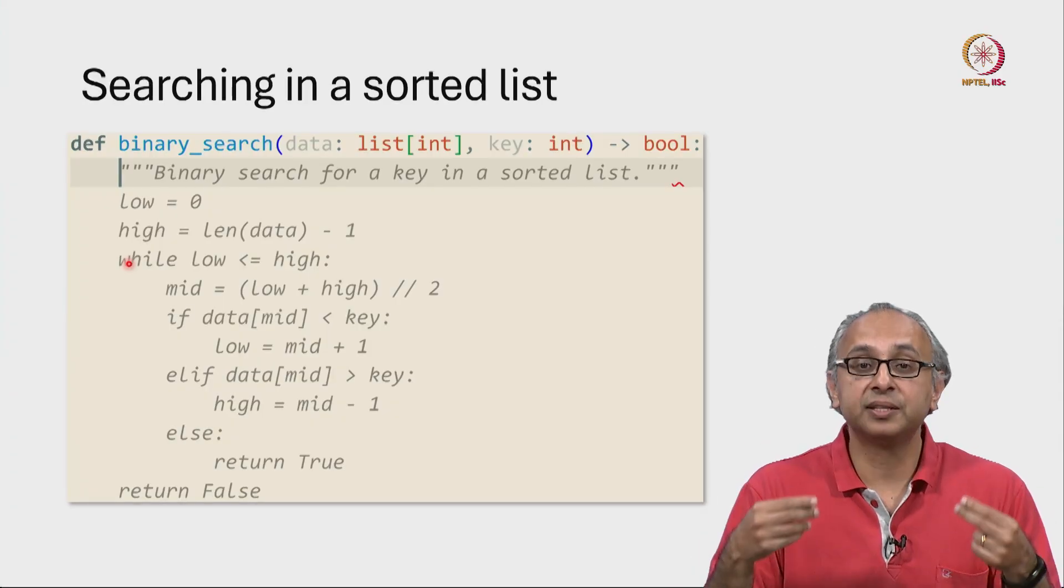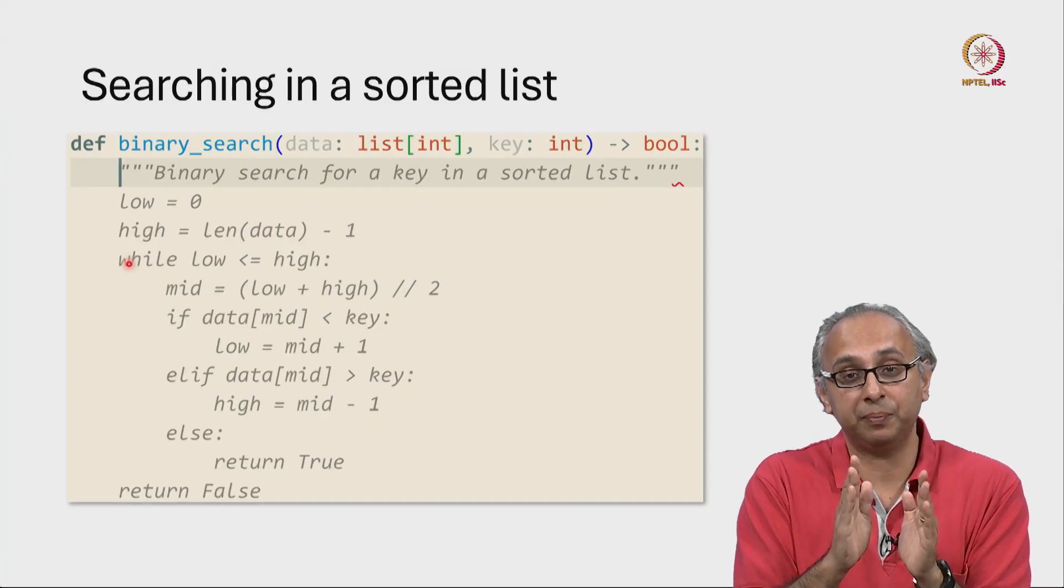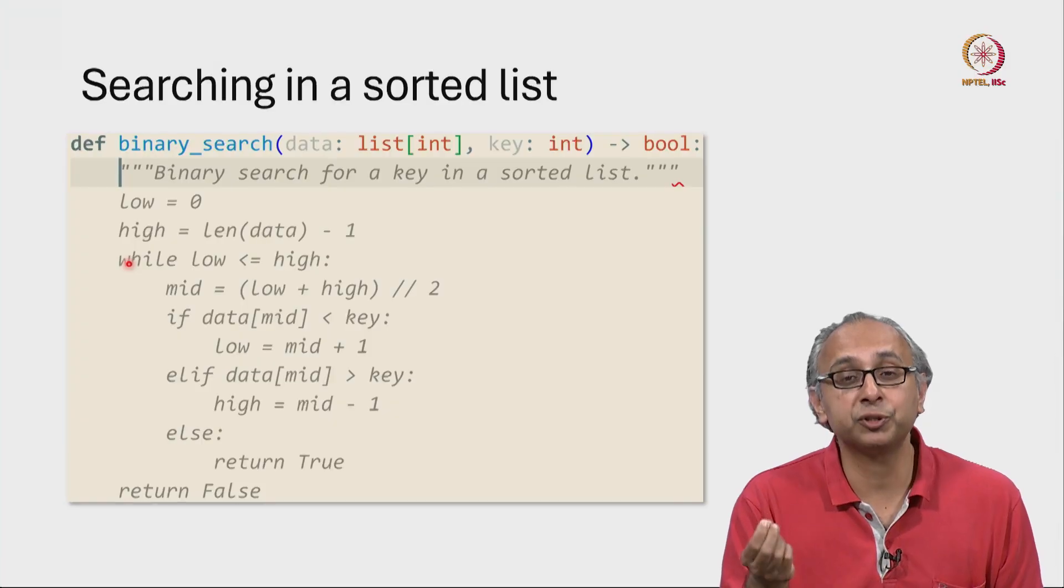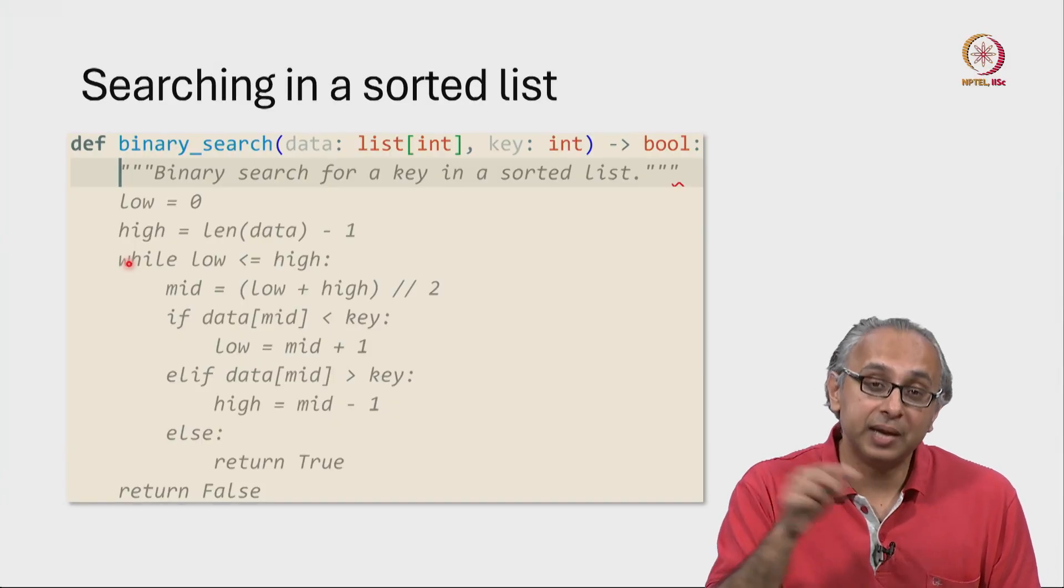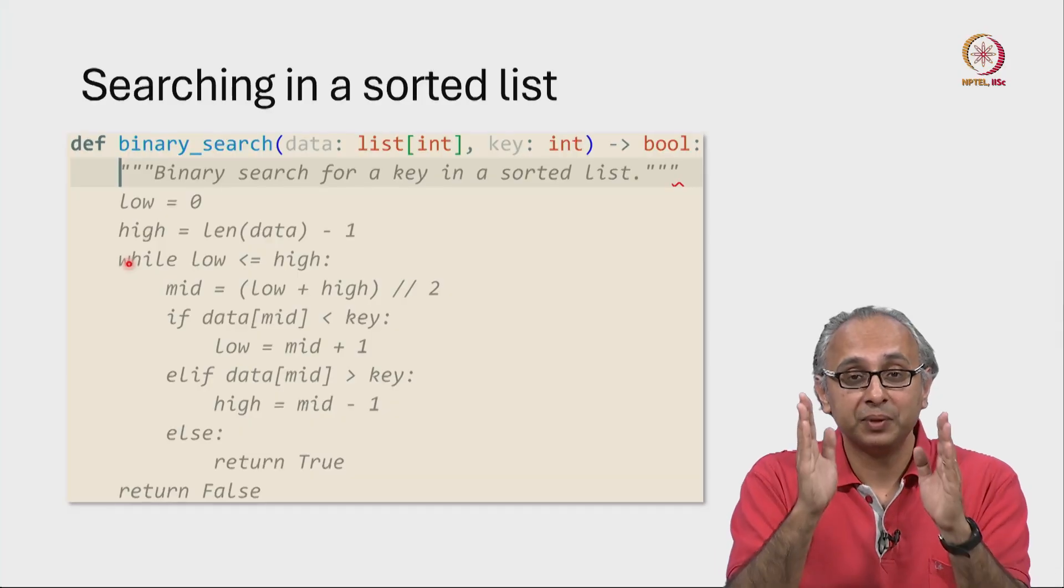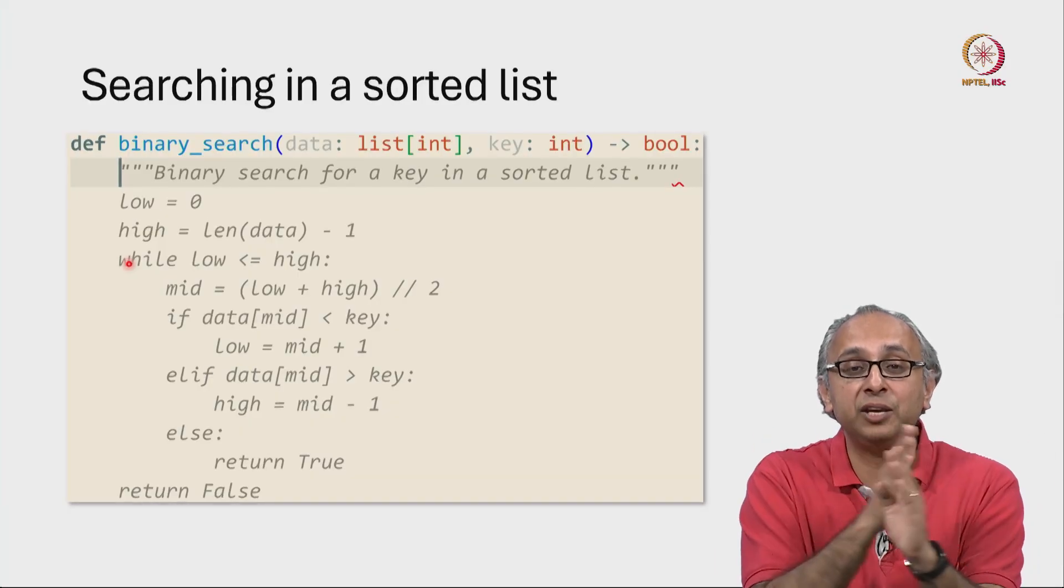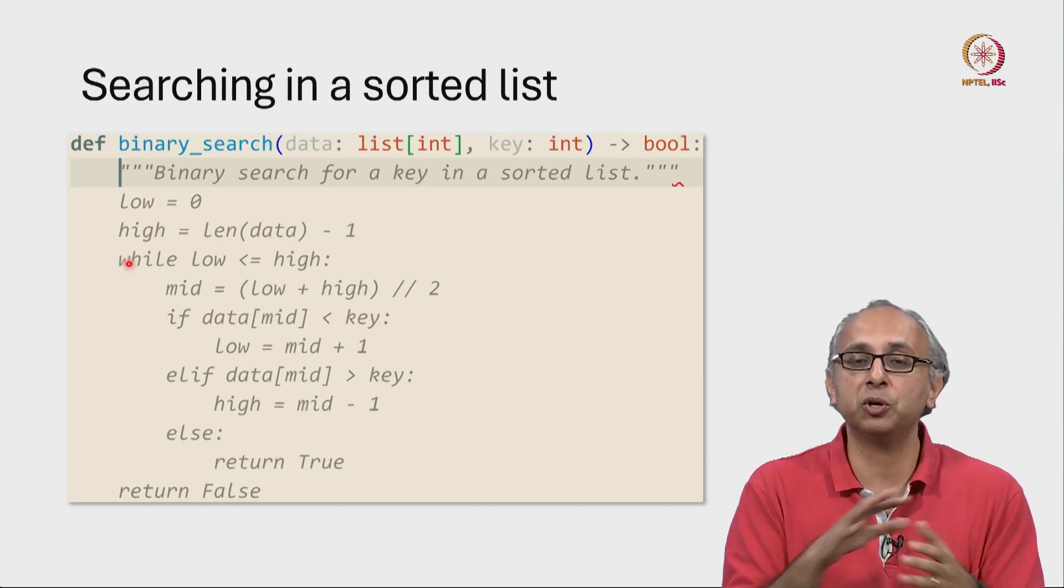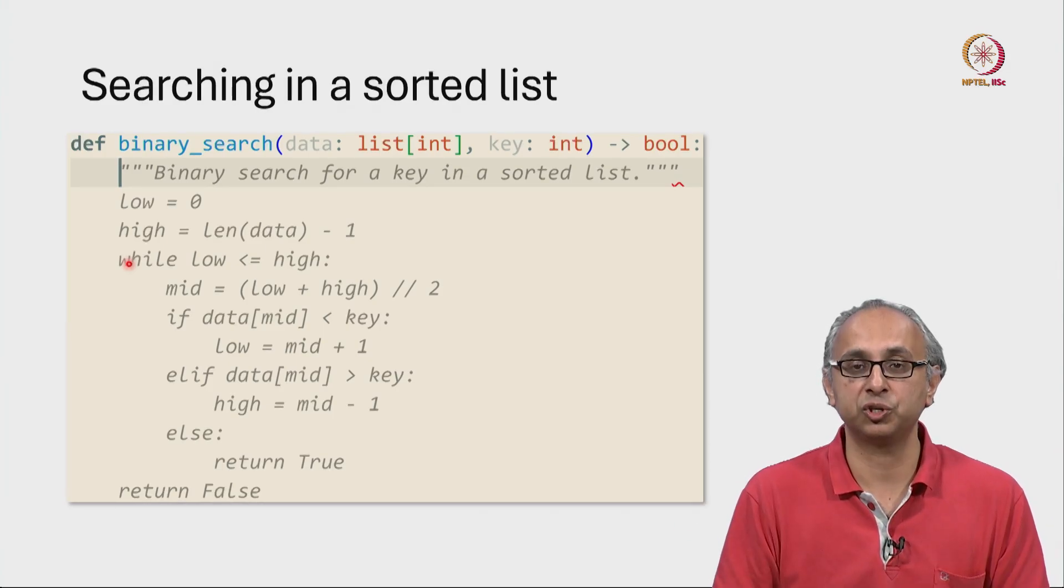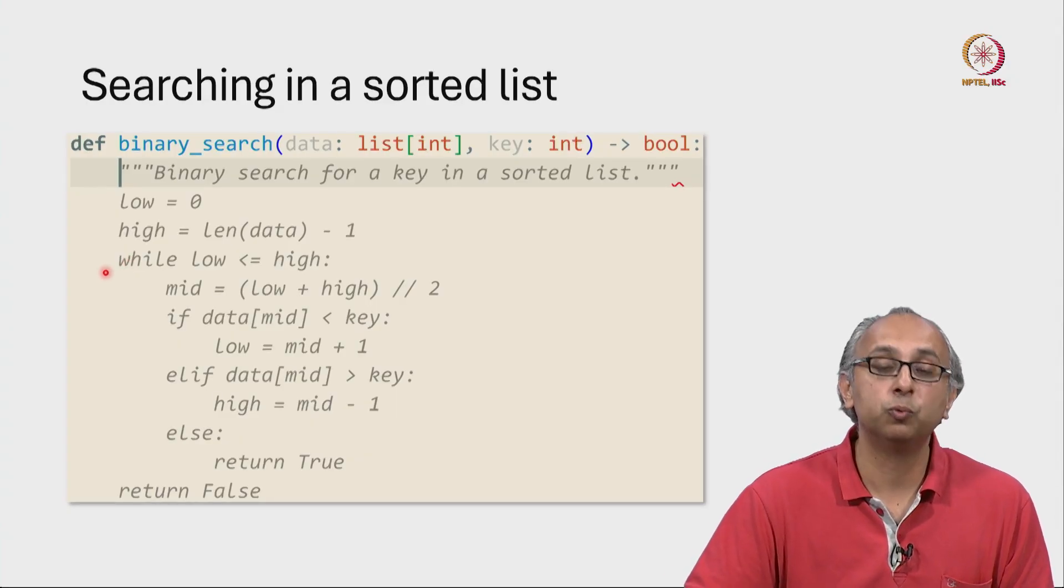Now as this search proceeds, this range will get narrower and narrower. And if the value you are searching for does not appear anywhere in the list, then at some point, low will become larger than high. These two values will cross over and that would correspond to an empty search region. And in that case, this while loop would finish and we would return false.